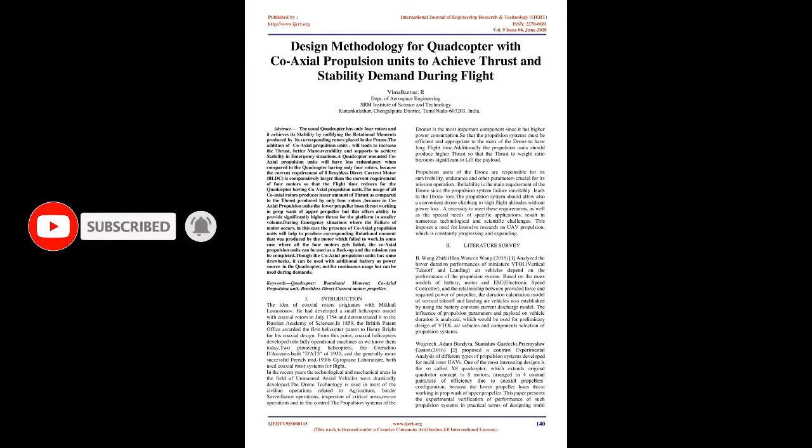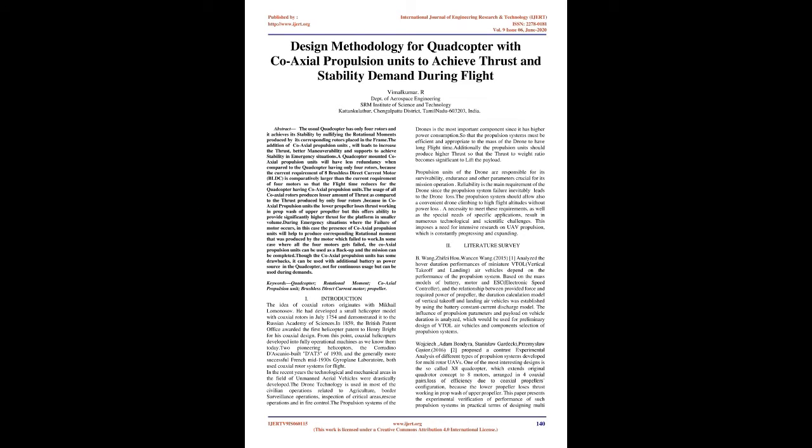they can be used with an additional battery as a power source in the quadcopter, not for continuous usage but during demands. Keywords: quadcopter, rotational moment, coaxial propulsion unit, brushless direct current motor, propeller.